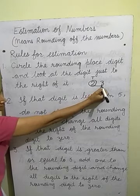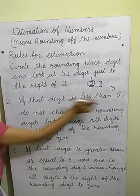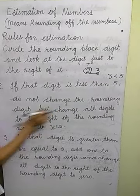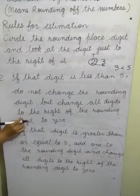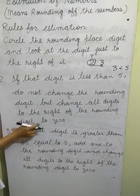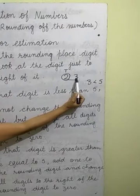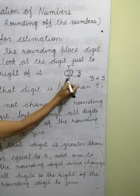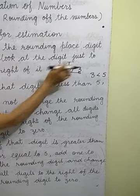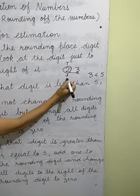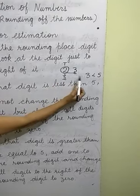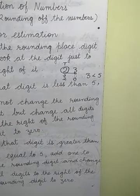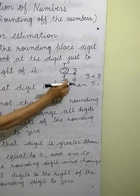If that digit — meaning the digit to the right — is less than 5, do not change the rounding digit, but change all the digits to the right of the rounding digit to 0. Here, 3 is less than 5, so the rounding digit 2 will not change, and the right digit turns to 0. So 23 will be rounded to 20 to the nearest 10.